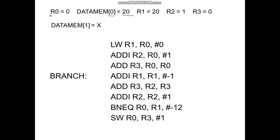The first register R0 is always 0. The 3 other registers are R1, R2, and R3. All these 3 registers would have initial value as don't care. After computing the sum of first 20 natural numbers, we would store the output in data memory location 1. So the input is from memory location 0 and the output is in memory location 1. There are totally 8 instructions for this program.